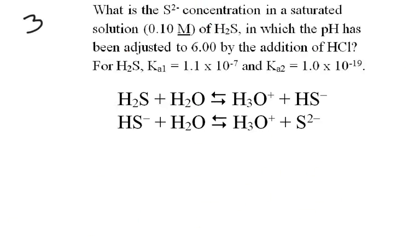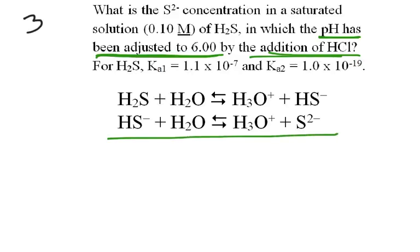Now, the third one is a kind of an odd situation. And here we're saying, what is the S2- concentration in a solution of H2S in which the pH has been adjusted to some number by the addition of a strong acid? Now, when you see those kind of words, that the pH has been adjusted, then we see that it's a different kind of a problem. And what we need to do is come back and say, okay, here are the two steps for Ka1 and Ka2.